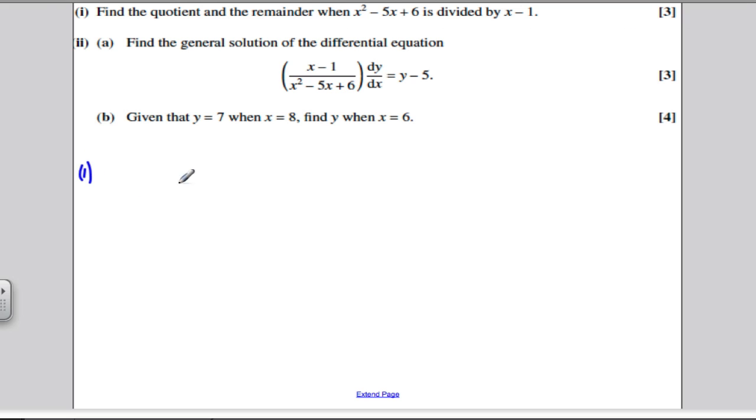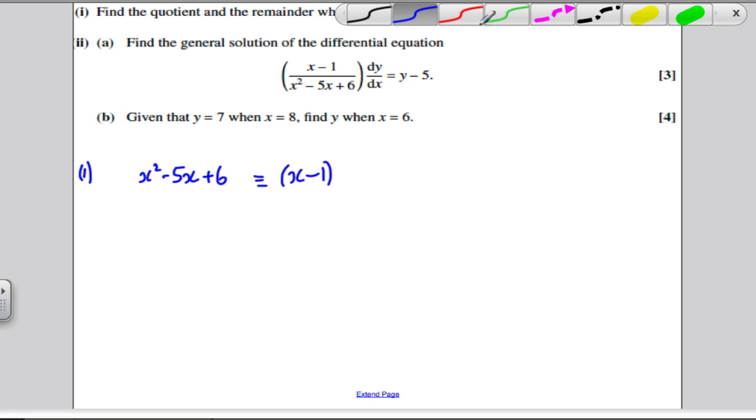I usually do mine as follows. I've got x squared minus 5x plus 6. Okay, and dividing it by x minus 1 is like factorizing out x minus 1. So I write that in the first brackets.